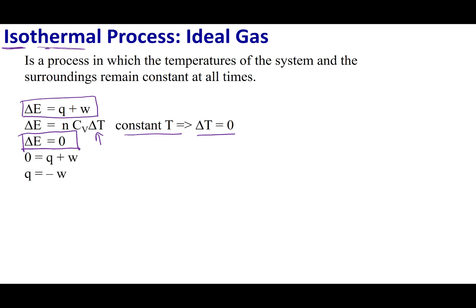Now, if ΔE equals zero, that means Q plus W has to equal zero. What this implies is that Q and W are equal in magnitude but opposite in sign. I want you to keep this in mind as we go ahead and do a little thought experiment.